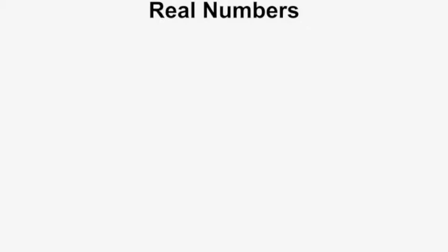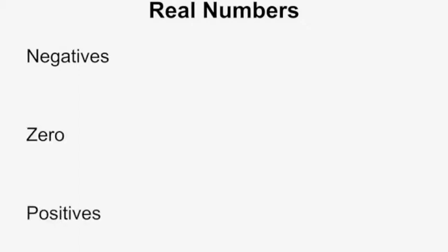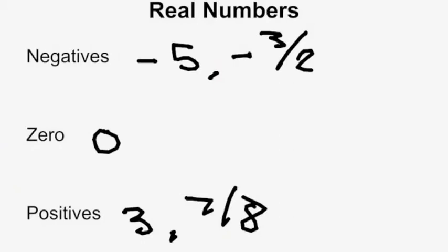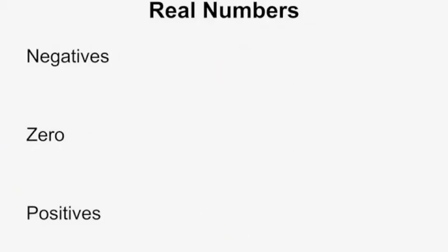Real numbers can be broken down further into negative numbers, zero, and positive numbers. Examples of negatives include negative 5 and negative 3 halves. Zero is obviously zero. Positives are the opposites of the negatives, such as 3 and 7 eighths. Those are the basic breakdowns of the real numbers.